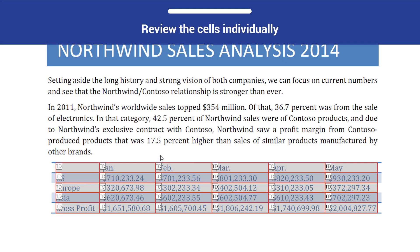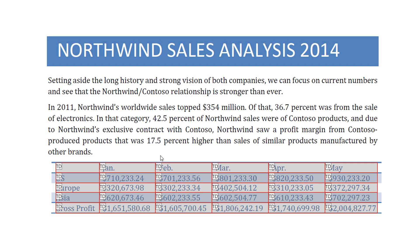You can now review the cell types individually. In this example, the document is not accessible. Every cell is labeled TD for table data. The header cells are in no way differentiated.